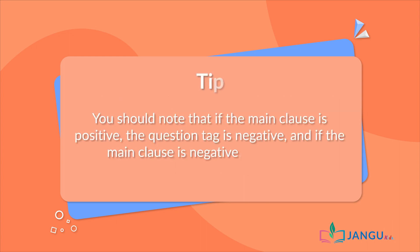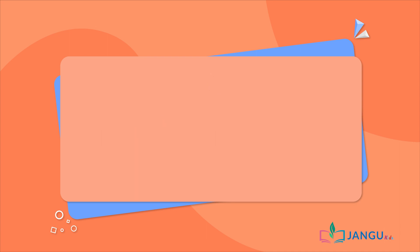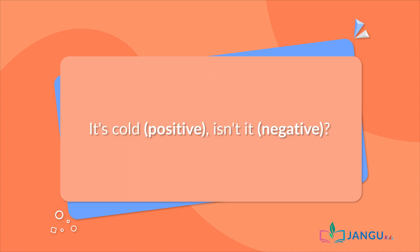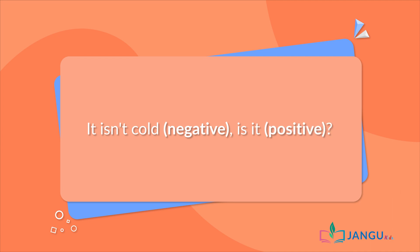Here's a tip: if the main clause is positive, the question tag is negative. And if the main clause is negative, the question tag is positive. For example, "It's cold" — that's positive — "isn't it?" — that's negative. And "It isn't cold" — that's negative — "is it?" — that's positive.